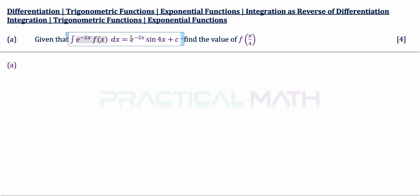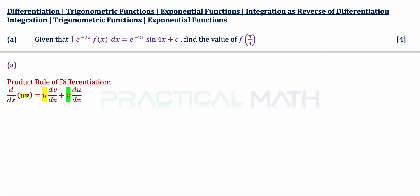Before we dive straight into the differentiation, let us first revisit the product rule of differentiation. By the product rule, differentiating u·v with respect to x, where u is the first item and v is the second item, gives us: copy down the first item u, differentiate the second item dv/dx, plus copy down the second item v, multiplied by differentiate the first item du/dx. Note that u and v must be functions of x for this to work.